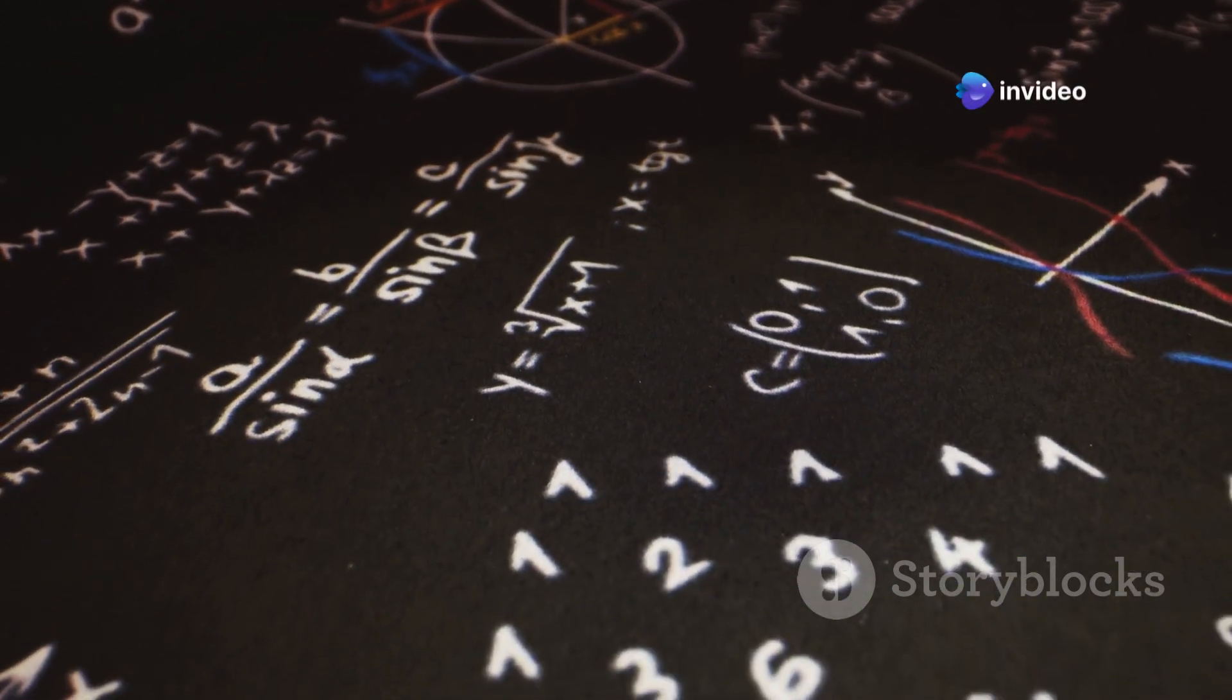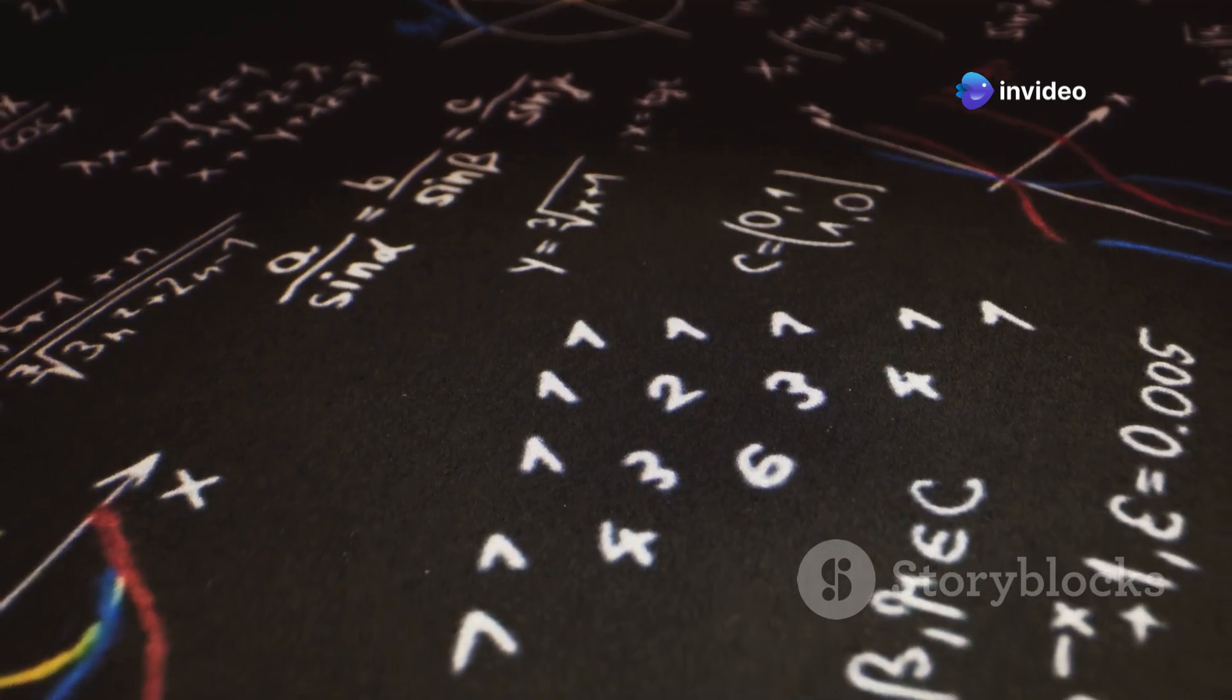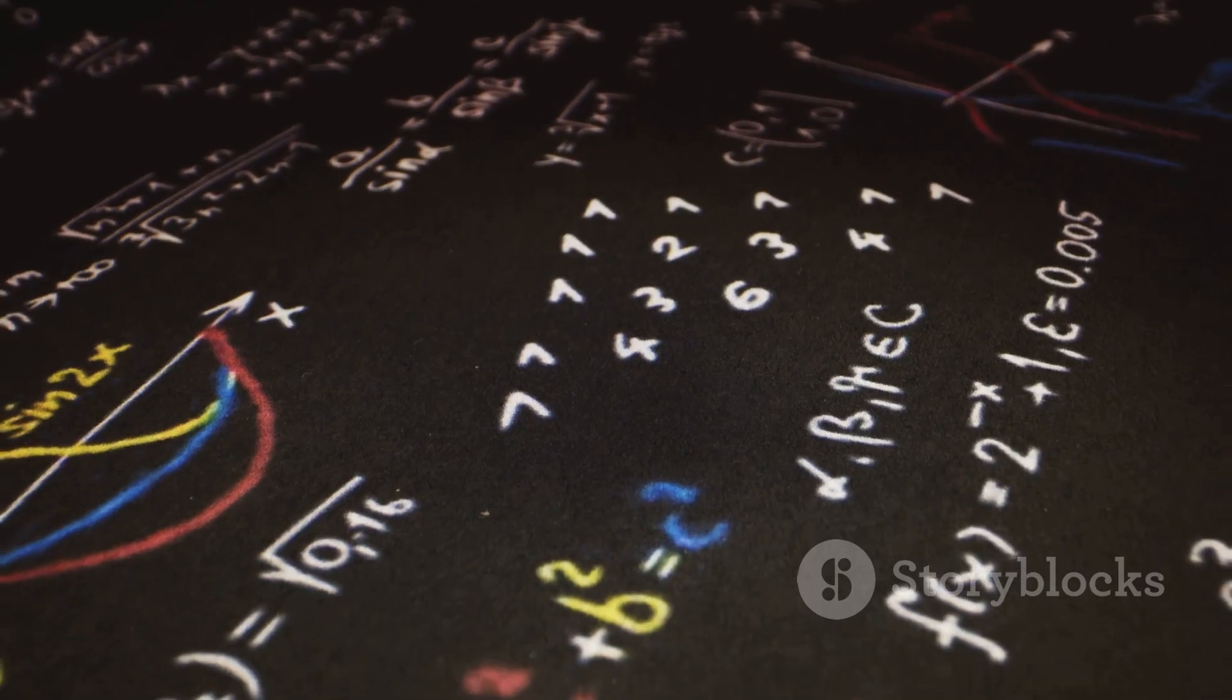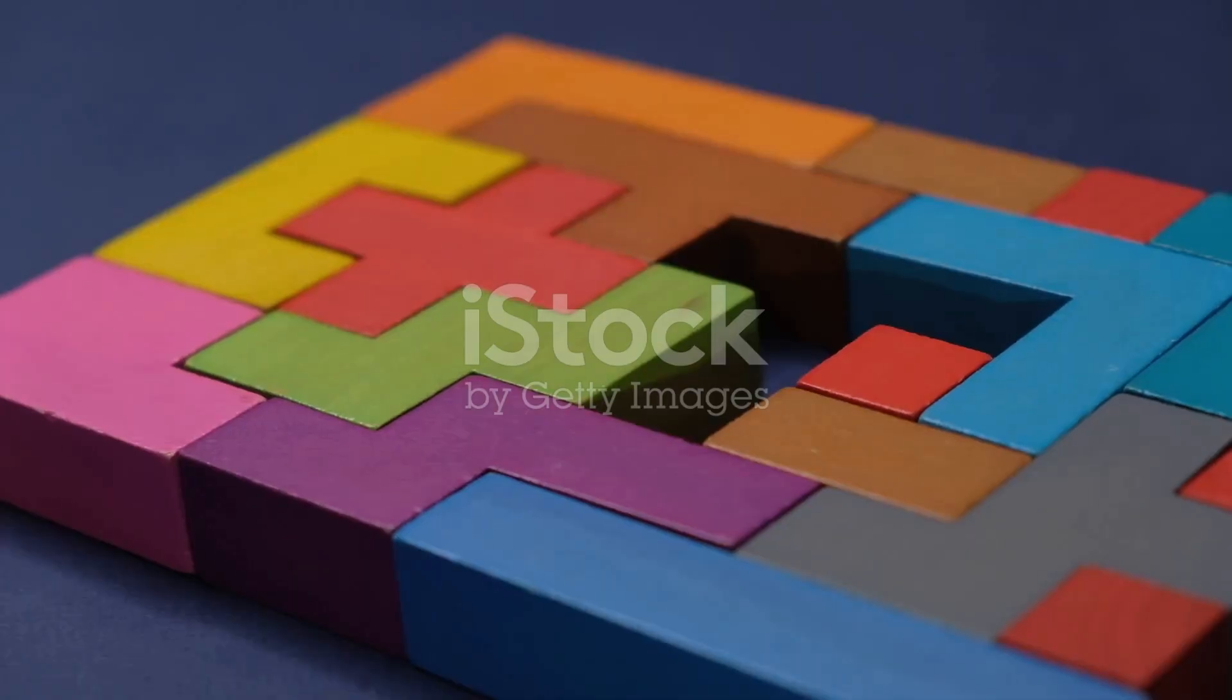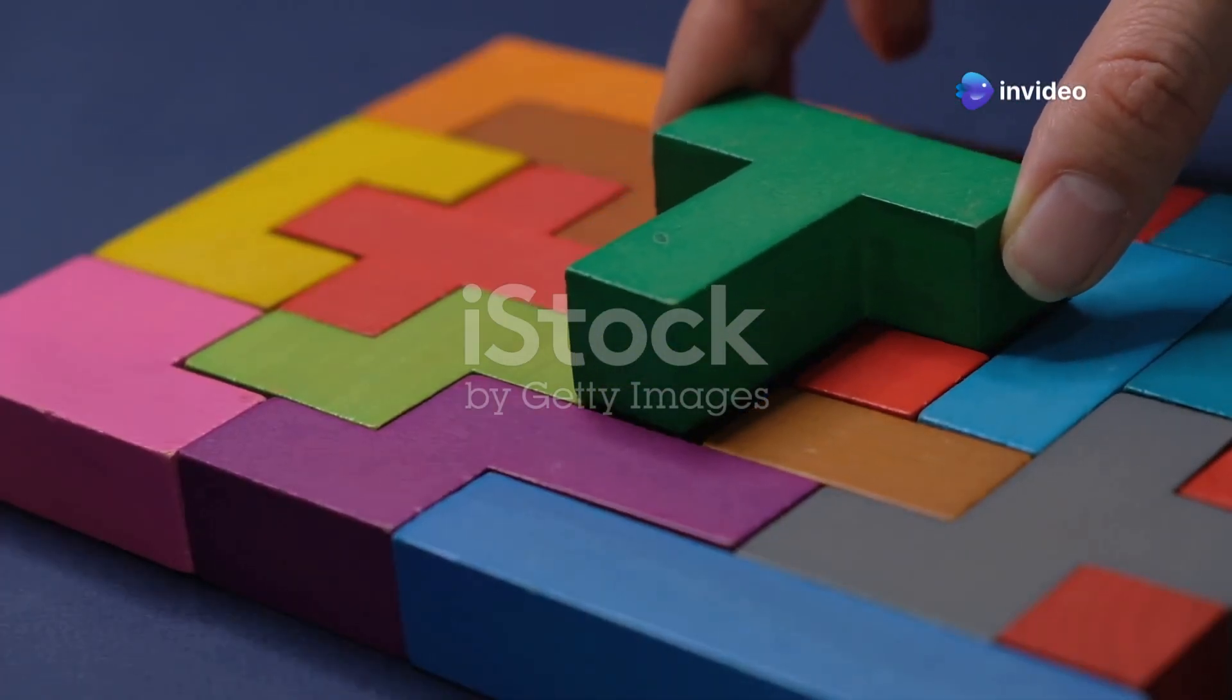Armed with the Bellman equation, we can now explore a family of algorithms known as dynamic programming, or DP, that allow us to solve MDPs and find optimal policies. These algorithms leverage the principle of breaking down a complex problem into simpler, overlapping sub-problems.